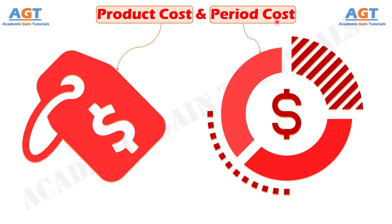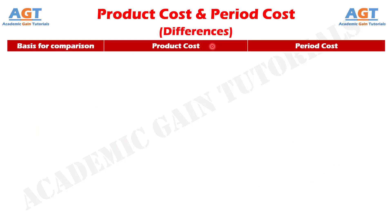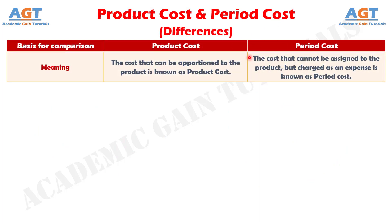So, let's look into the basic differences between product cost and period cost in a tabular form. Difference number 1: product cost is the cost which can be directly assigned to the product, whereas period cost is the cost which relates to a particular accounting period.